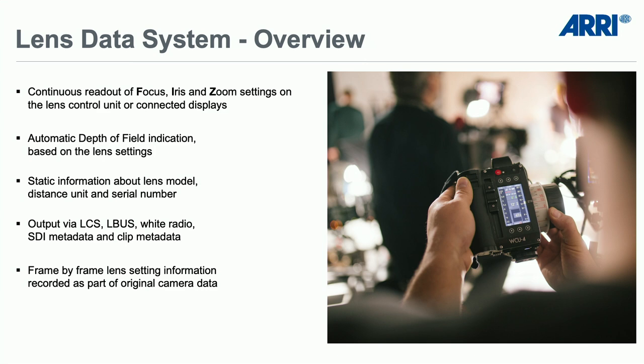The lens data system has been introduced in 2009 with the ARRICAM and the Ultra Prime LDS lenses. Since the system was digitized with the Alexa, it's no longer only a system for display but can also be recorded together with the camera data. What you get from lens data is a continuous readout of focus, iris, and zoom; depth of field calculation directly on your focus unit; static information about the lens model, distance units, and serial number; and output of all your live lens data over several connections of the camera.